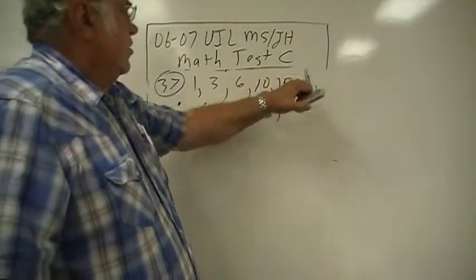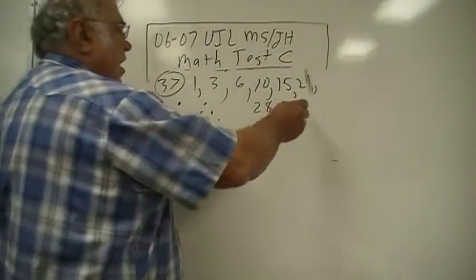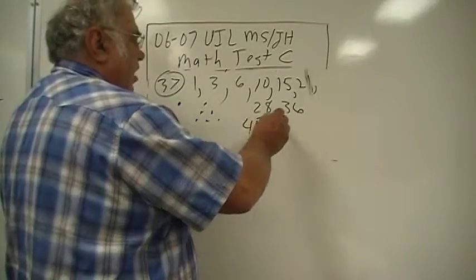One, two, three, four, five, six, seven, eight. And nine to that would be forty-five, and ten would be fifty-five.